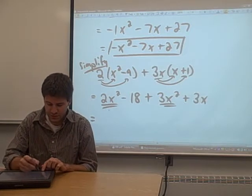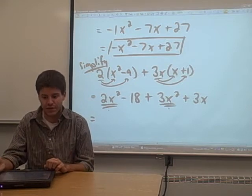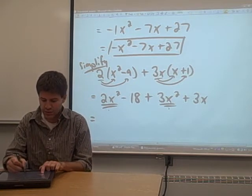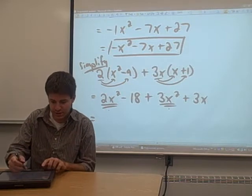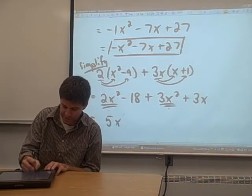Now to do this, all we have to do is look at the two coefficients on those like terms. The 2 and the 3 are going to add to 5. So when you combine these two like terms, you're going to end up with a 5x squared.